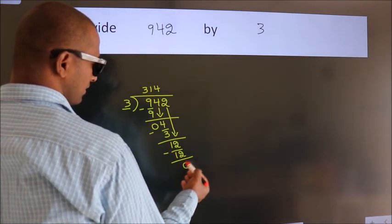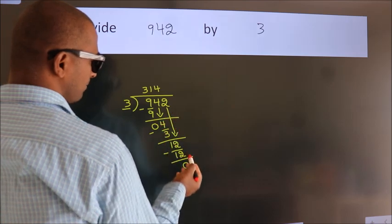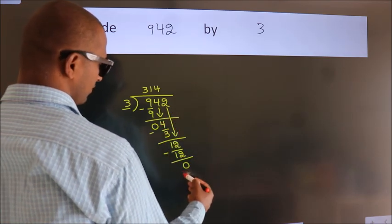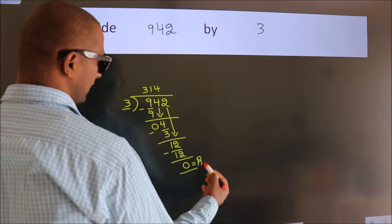After this, no more numbers to bring it down. So we stop here. This is our remainder. This is our quotient.